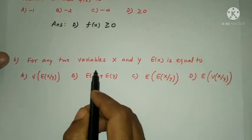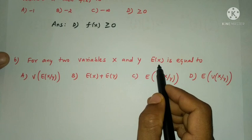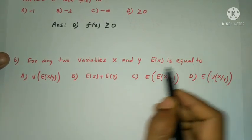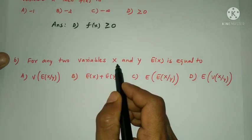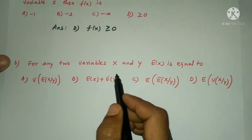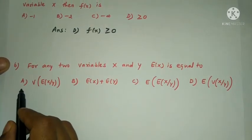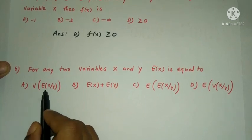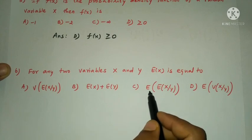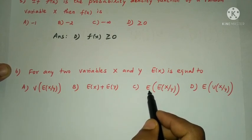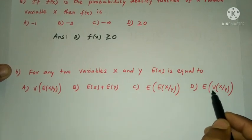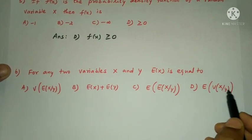Next question: for any two variables X and Y, E(X) is equal to — options: variance of E(X|Y), E(X) plus E(Y), E[E(X|Y)], or E[variance of E(X|Y)].